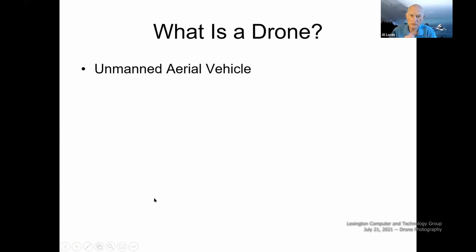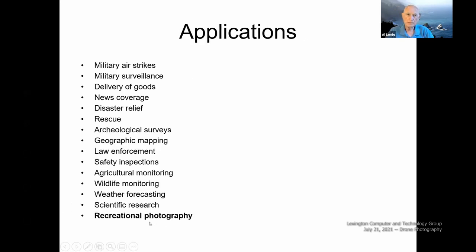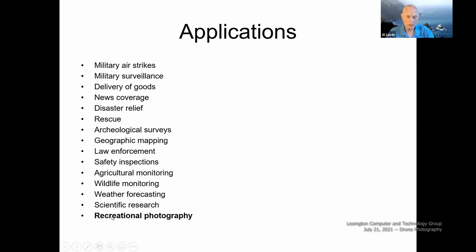What is a drone? The conventional definition says that a drone is an unmanned aerial vehicle. For those of us whose major interest is photography, a drone is basically a flying computer that happens to have a camera attached to it. The origins of drones have been primarily military, but over the years the applications have evolved widely. This morning I'm going to limit my remarks to recreational photography — specifically still photography. I don't do video.